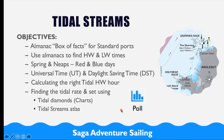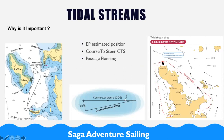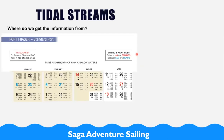Why are tidal streams and finding information about them so important? If we are out sailing and we have a fix, we need the tidal information to calculate our estimated position. We also need it if we want to go somewhere and there's a tide — we need to calculate our course to steer. For passage planning it's very important; if we want to go around a headland we need to arrive at the right time, so the only way to find that out is to check the almanacs and tidal atlases.